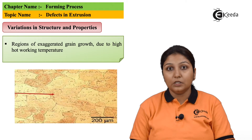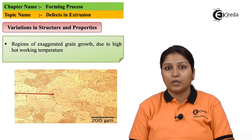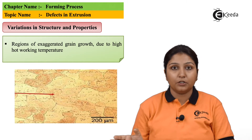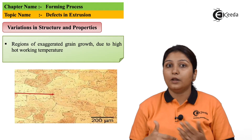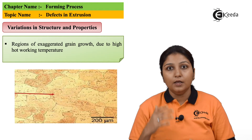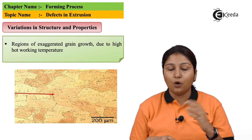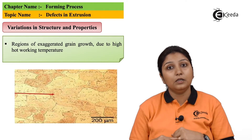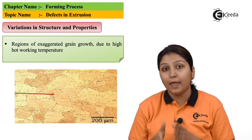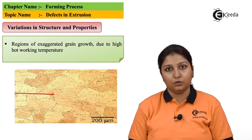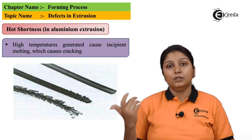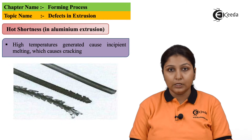In this defect, what happens is the structure changes. Why? Due to high hot working temperature, the product or your extruded product changes continuously. So there is a gain or regain in the structural properties due to this high temperature. This is variation in structural and physical properties.